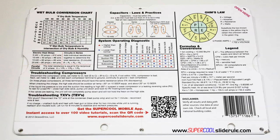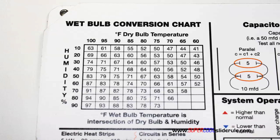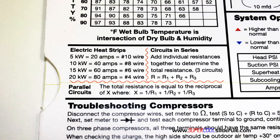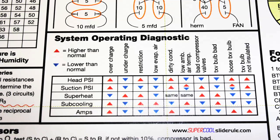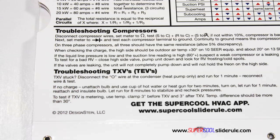The back cover contains required formulas. It has capacitor rules and practices, a wet bulb conversion chart, how to perform computations on series or parallel circuits, and an electric heat strip guide.